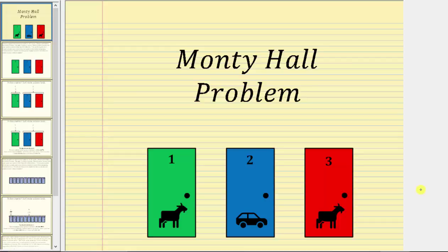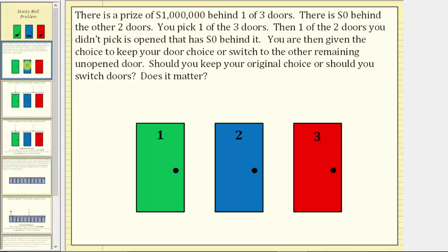The Monty Hall problem is based upon an old game show where a contestant picks one of three doors. Behind one door is a new car, and behind the two other doors are goats. For this video, we will be changing the prizes. There is a prize of one million dollars behind one of three doors, and zero dollars behind the other two doors.